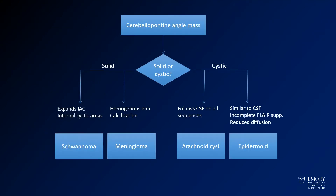Here's a workflow for cerebellopontine angle masses. You should first identify whether the lesion is solid or cystic. If it's enhancing solidly, it's going to be either a schwannoma or a meningioma, depending on where it's centered. Schwannomas expand the internal auditory canal and have internal cystic areas. Meningiomas tend to be more along the dura and enhance homogeneously.